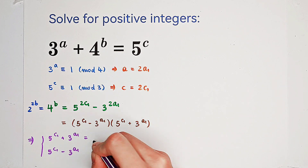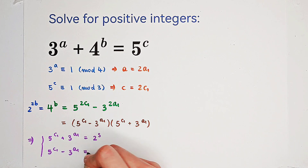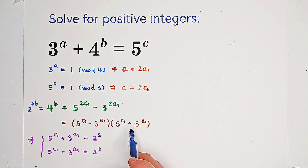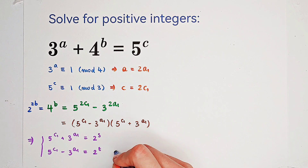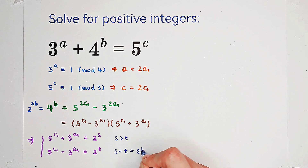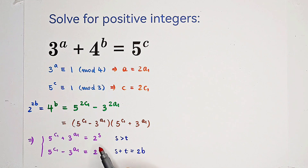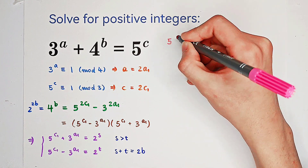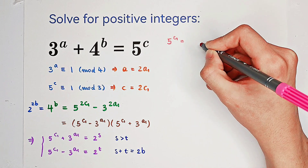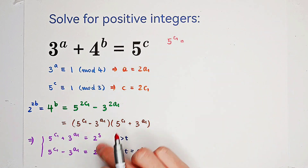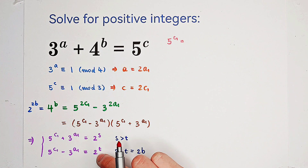Let the larger factor be 2 to the power of s and the smaller be 2 to the power of t. Since the larger exceeds the smaller, s is greater than t, and s plus t equals 2b. We can then express 5 to the power of c1 as the sum of these two factors divided by 2.